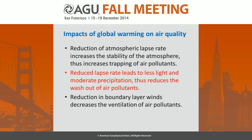With reduced atmospheric lapse rate, we are going to have increased stability of the atmosphere, which would trap air pollution near the surface. Also, with reduced lapse rate, light and moderate precipitation will be affected since they rely on instability — so reduced lapse rate will reduce light and moderate precipitation, decreasing the washout rate for air pollutants. More stability also means reduced boundary layer wind, and there are other reasons for decreased prevailing wind in a warming atmosphere.